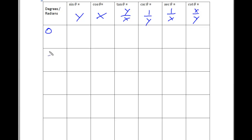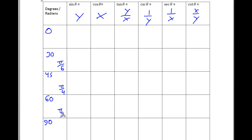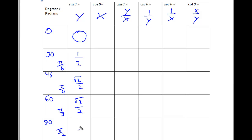Degree-wise we're going to go 0 degrees, 30, 45, 60, and 90 degrees. In terms of radians this would be 0 radians, pi over 6, pi over 4, pi over 3, and then pi over 2. From the unit circle, looking at the y values, we're going to start off with the height of 0, then 1 over 2, then square root of 2 over 2, square root of 3 over 2, and then 1. For the x values it's going to be the whole thing backwards: starting with 1, square root of 3 over 2, square root of 2 over 2, 1 half, and 0.